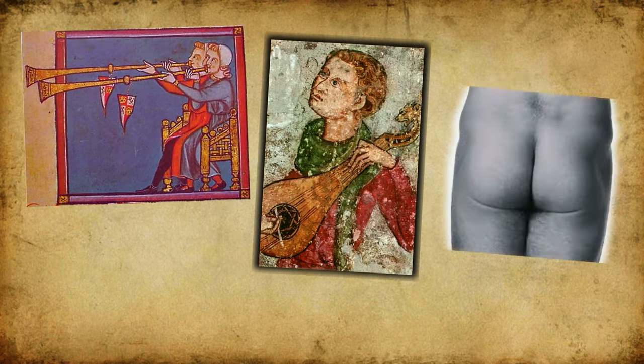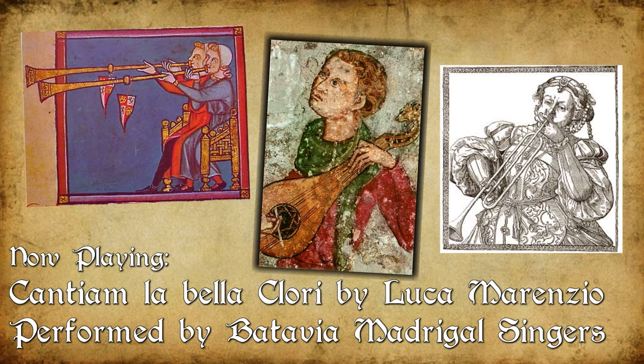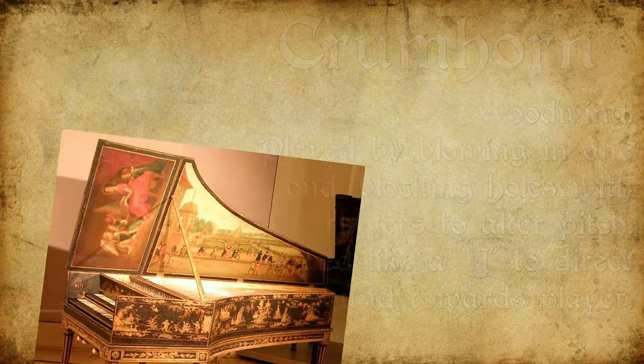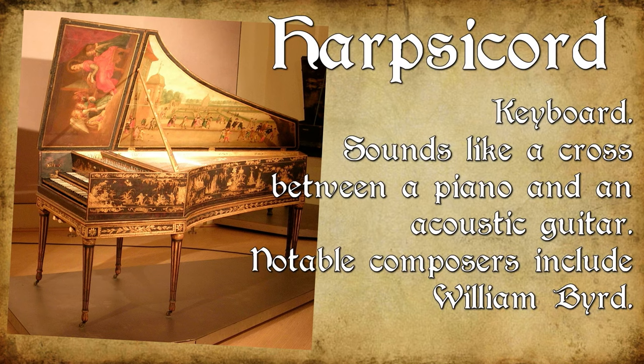In addition to trumpets, gitterns, and sackbuts mentioned in the last video, there were three important developments. The crumhorn was a common woodwind instrument from the Renaissance, constructed similarly to the bagpipe, with a player blowing in one end and placing fingers over holes to vary the pitch. It is shaped like the letter J, which directs the sound towards the player. Keyboard instruments like those of the harpsichord family appeared in the early 16th century — visually they resemble a grand piano but sound a little more like an acoustic guitar to the modern ear.